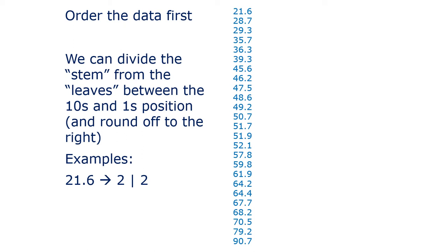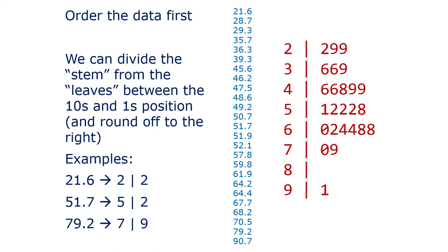21.6 would round to 22, because we're going to split between the 20 and the 1. So 1.6 is closer to 2, making 2 the stem and 2 in the leaf, because it's 22. And 51.7 would be 50 and 2. 79.2 would be 7 and 9. Here's the stem plot. You can see on the left-hand side you have all the powers of 10. You want to be continuous and not skip any: 2, 3, 4, 5, 6, 7, 8, 9. I didn't start with 1 or 0 because there aren't any of those in my data.